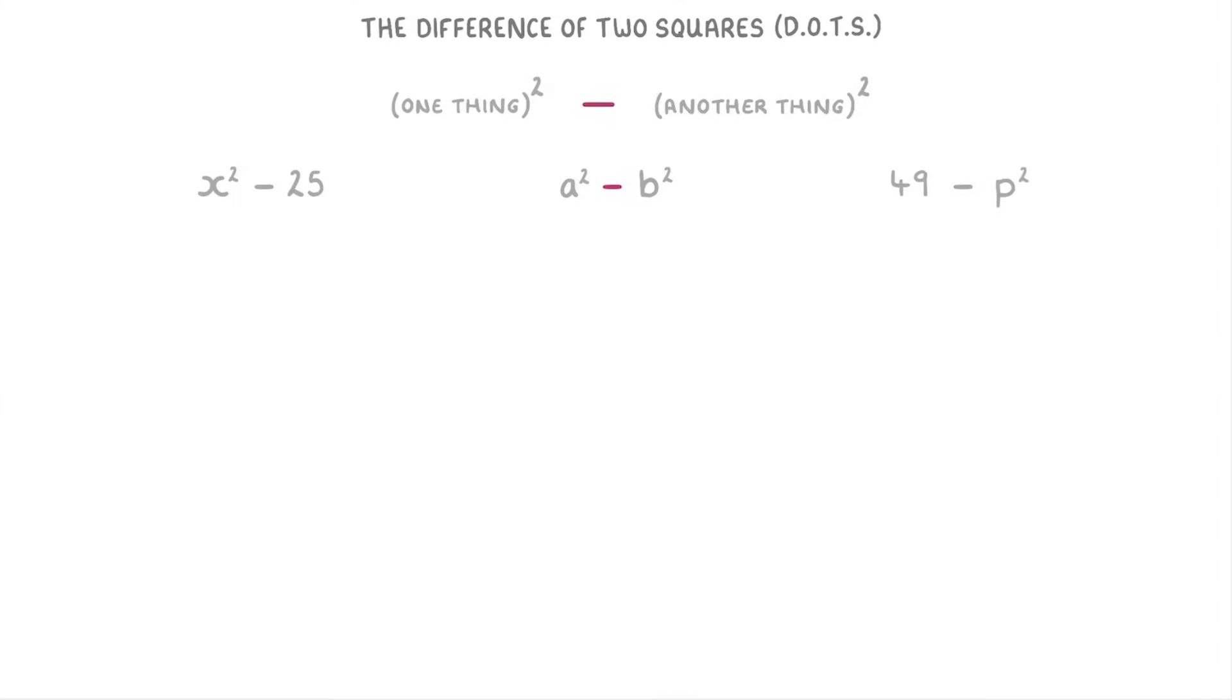To factorize these expressions, all you need to do is figure out the two things that are being squared. So in our a squared minus b squared example that would be a and b. Then we stick these into two sets of brackets, one where we add them together so a plus b and the other where we subtract them so a minus b. It's always the second thing that you subtract from the first.